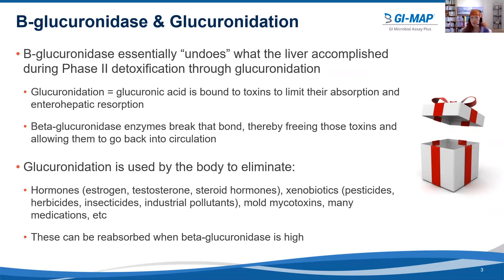Here's an analogy for this. Picture glucuronidation as a box. The liver gets things all packaged up — it puts toxins it wants to get rid of inside of a box, puts the lid on the box, and ties a nice little bow around it with a ribbon. Well, along comes beta-glucuronidase like a pair of scissors. It snips the ribbon, unties the bow, opens the lid, and lets all the toxins out of the box so they can wreak havoc.